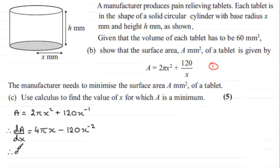So at this point I'm going to say that therefore dA/dx is going to equal 4πx and then for this, this is 120 times 1 over x². Well 120 times 1 over x² is going to give me minus 120 then over x².